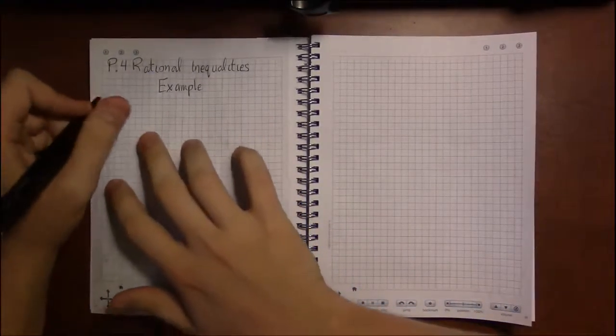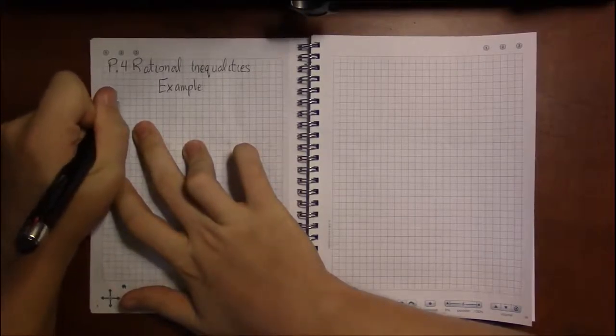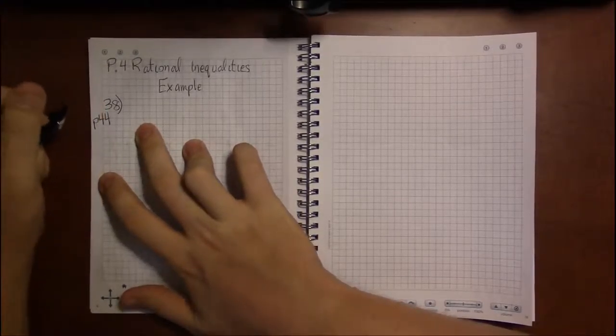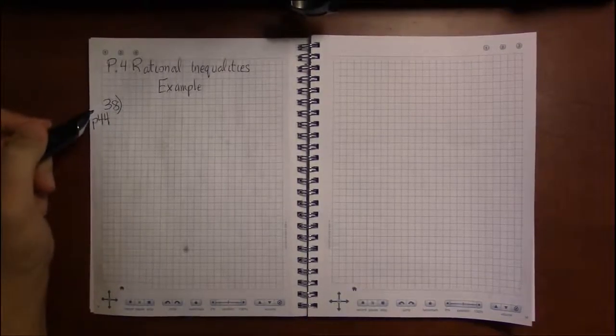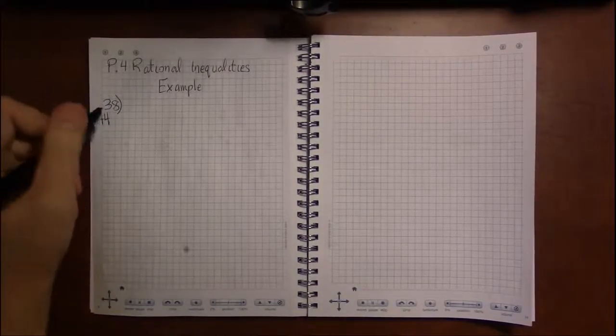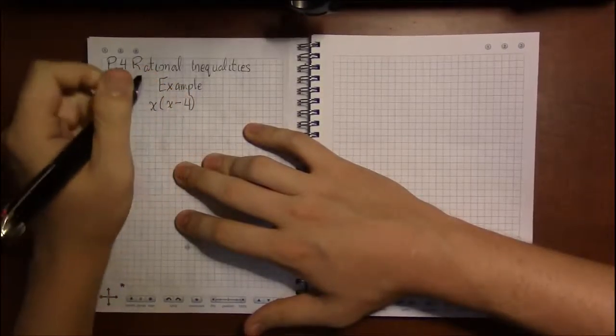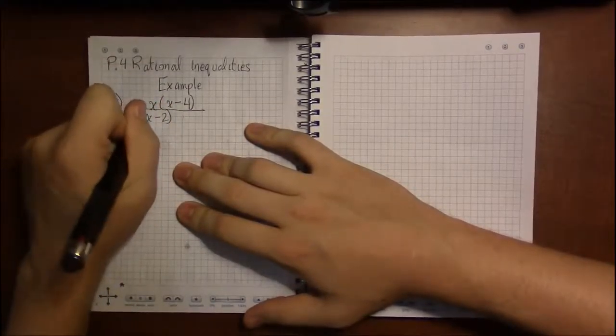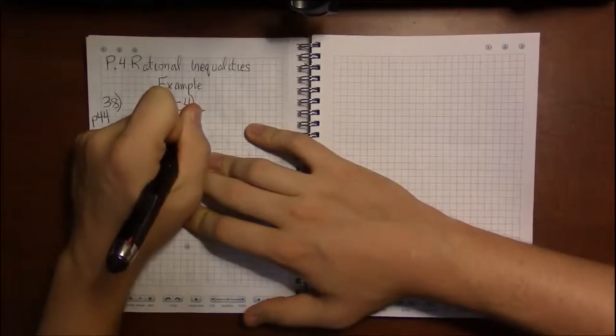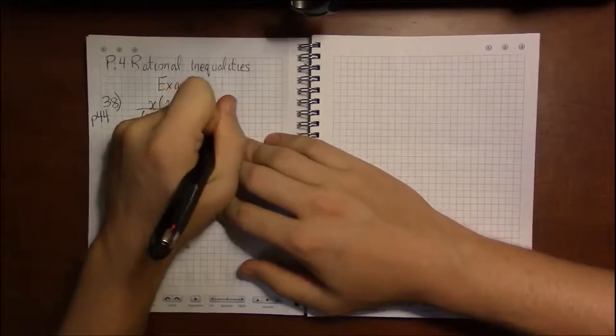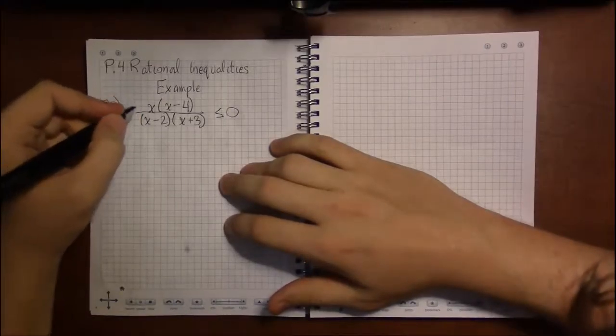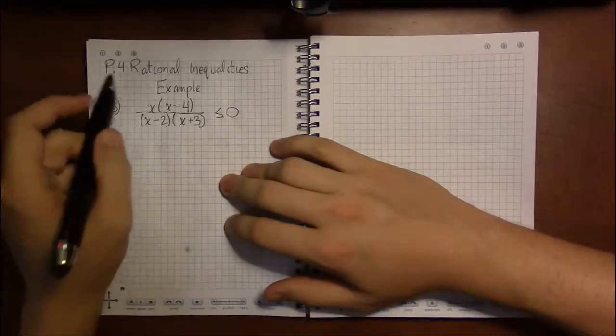All right, so in the last video, you got a good idea that these rational inequalities are a real pain. There is a fair amount of conceptual difficulty, but I think the real difficulty lies in the fact that they're just long as can be. It's just really, really tedious. Well, welcome to College Algebra, where fun dies. Not that it ever lived here, but in any case, enough of my bitching. Let's see. So on 38, page 44 in P4, we've got x times x minus 4 divided by x minus 2 times x plus 3.